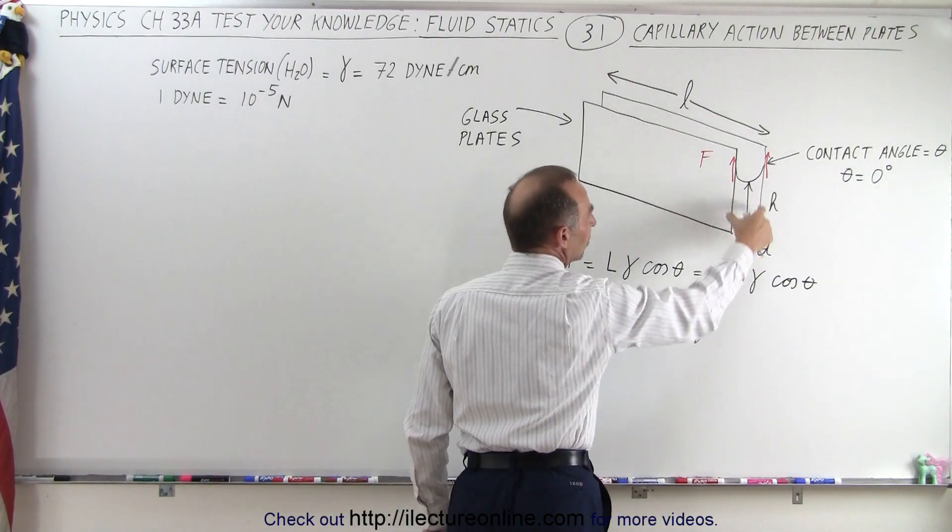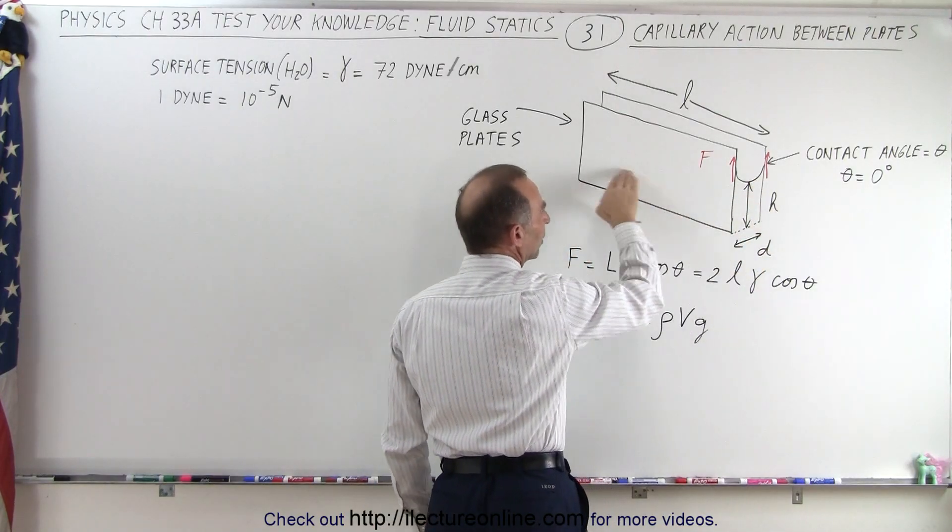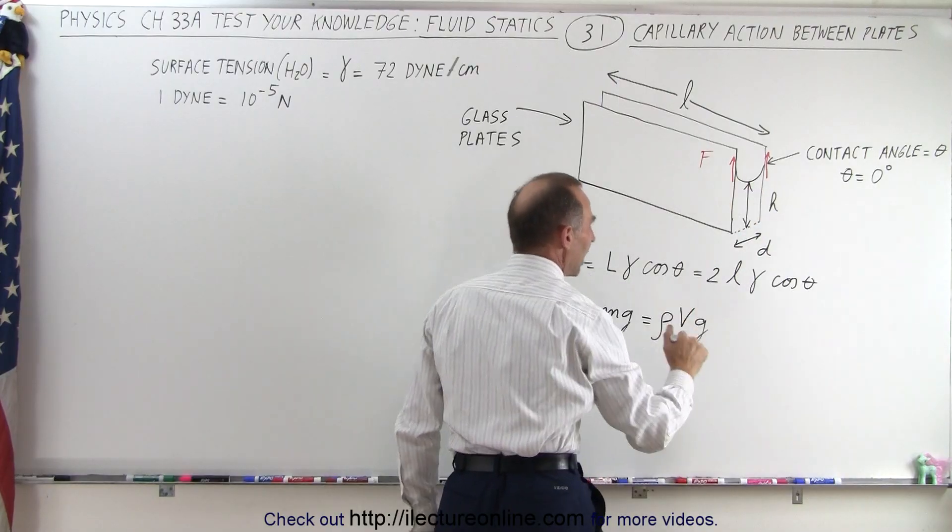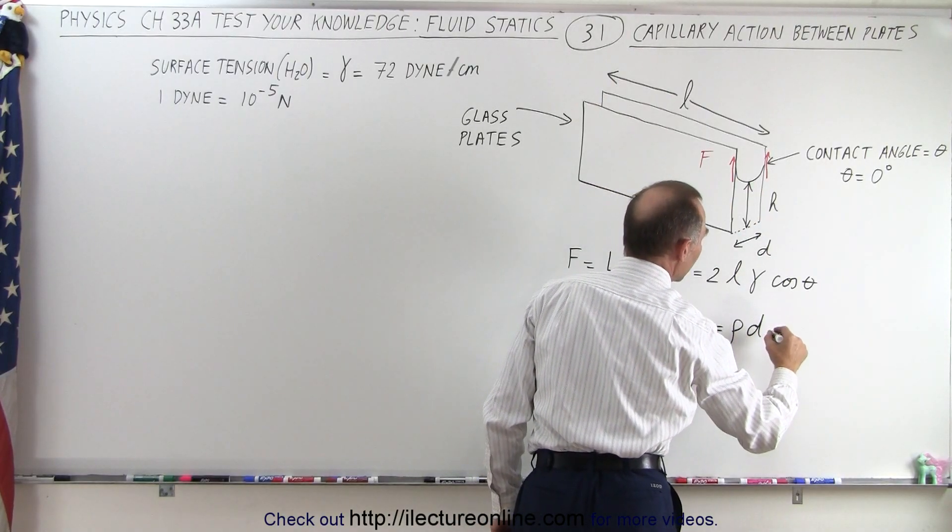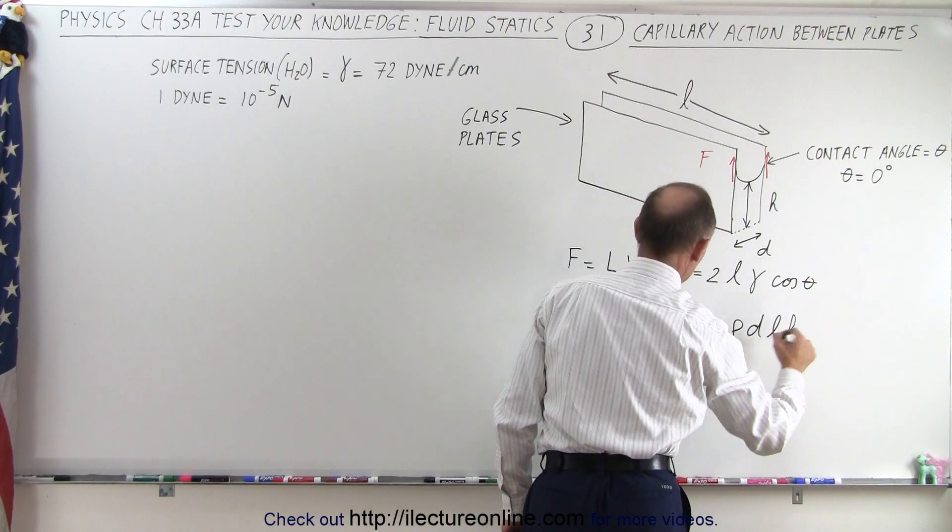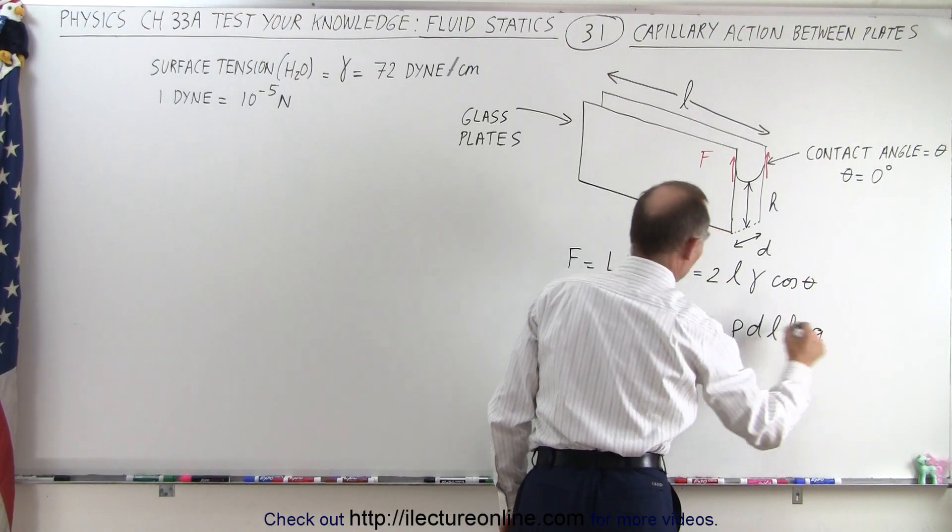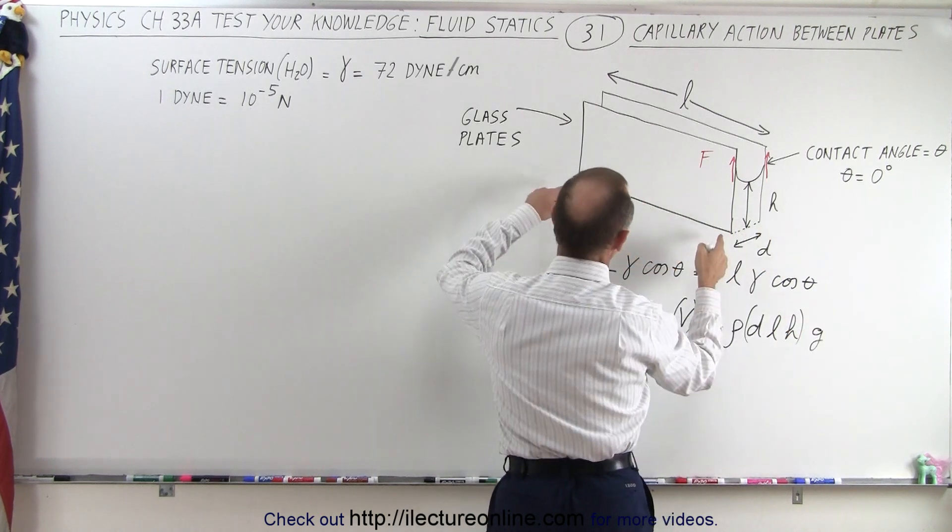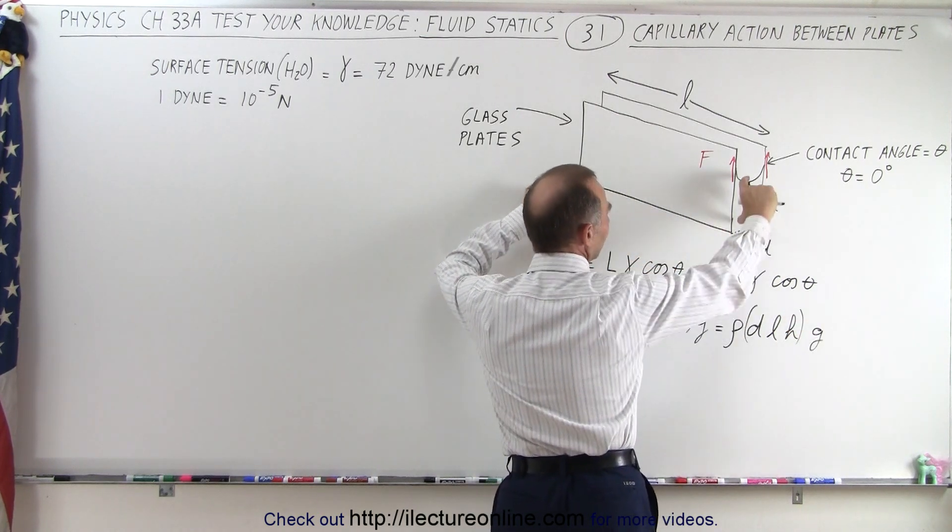Now how much volume is here? Well it would be the area of the bottom, that would be D times L times H. So this is the density times D times L times H, and then g. So the volume here can be expressed in terms of this distance times the length, that's the area, times the height.